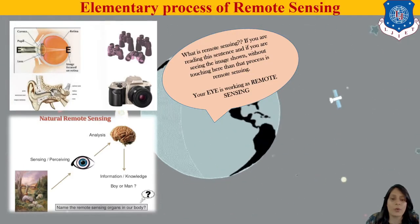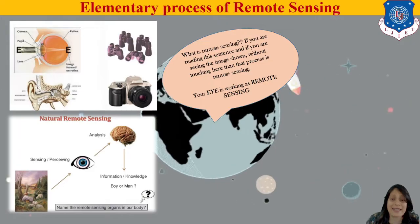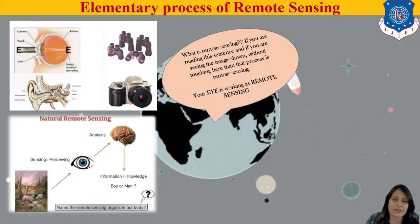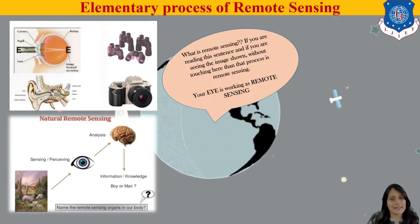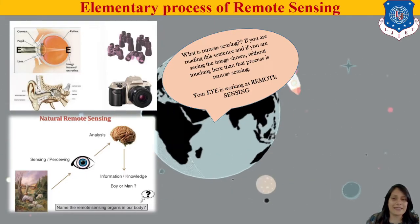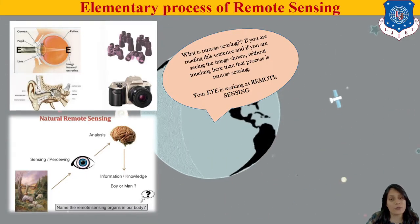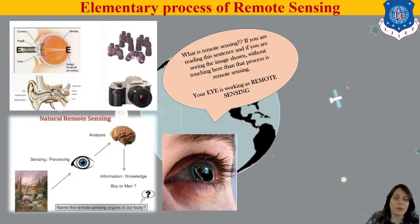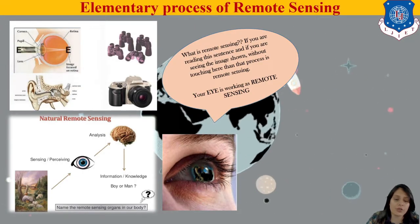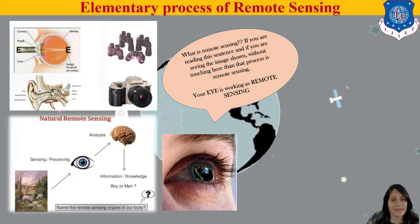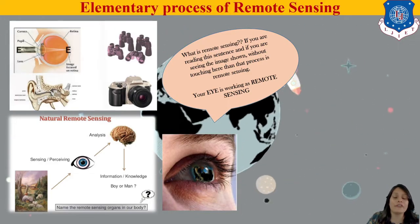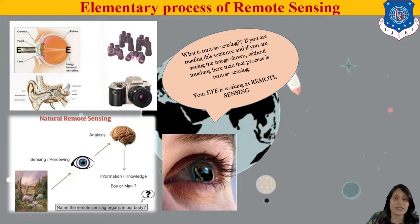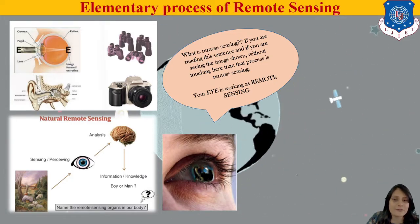If you are reading a sentence or seeing an image without touching it, then that process is simply called Remote Sensing. Your eye is working as a remote sensor. This is the elementary process of Remote Sensing — without coming into contact, just visual information goes to the mind and then we decide. We human beings are remote sensors. We have been using this technology since our birth, but haven't used it in technical terms.